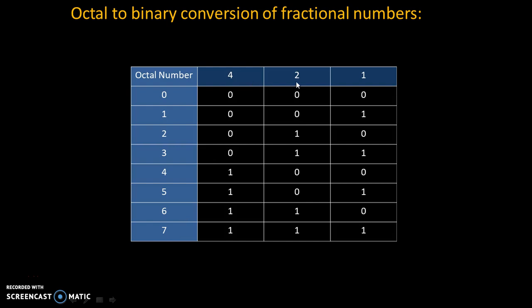7 is 4 plus 2 plus 1, that's why the code is 111. Once we know this conversion method, then we can easily convert octal to binary.